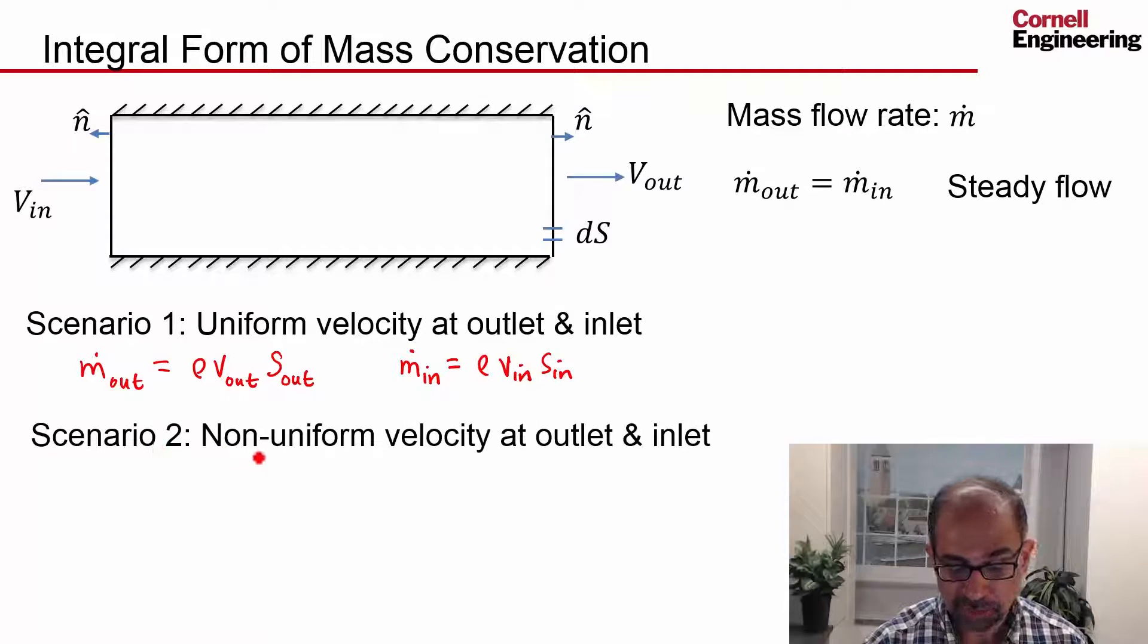Let's move on to scenario two where we have non-uniform velocity at the outlet and inlet. So this is what you're going to have in most cases. And not only that, let me say that if I had a differential surface element here, the velocity at any particular location like that is not perpendicular to the surface.